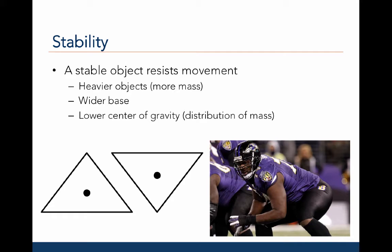The football player to the right is Michael Orr, who played for the Baltimore Ravens. He was considered difficult to move, or was very stable, because he was heavy, often adopted a wide base of support, and had a very low center of gravity. Therefore, he was good at resisting movement.